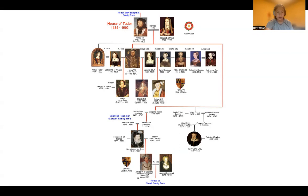The first monarch of the House of Tudor is Henry VII, followed by his son Henry VIII, then his son Edward VI, and then Mary I and Elizabeth I. That's five monarchs, though some historians would argue there were six. The sixth possible being Jane Grey, who ruled for nine days between Edward VI's reign and Mary I.